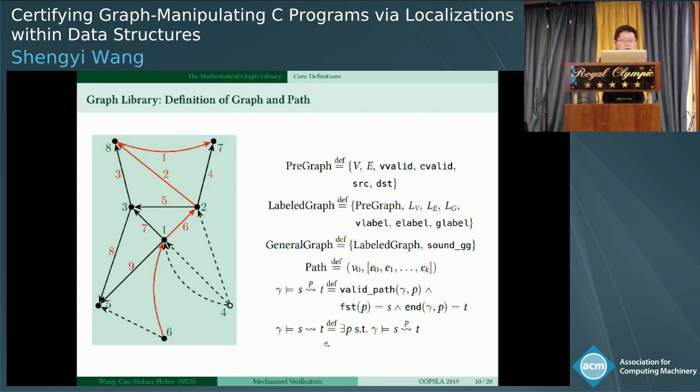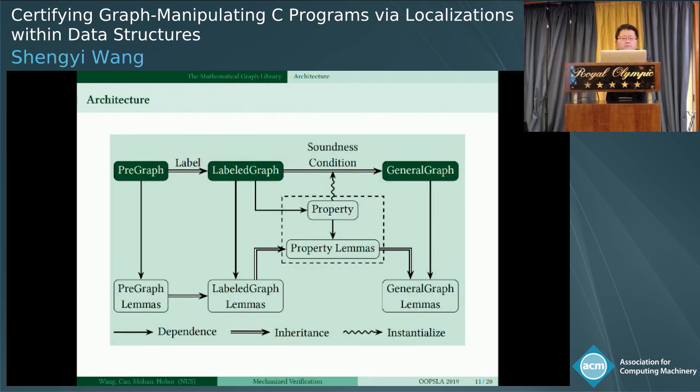Sometimes we only care about the reachability, we don't care about concrete path. Then it can be generalized as t is reachable from s in gamma. This is our architecture of the mathematical graph library. We can see that it's based on three core definitions: pregraph, labeled graph, and general graph. According to the definition, they are inherited, so their lemmas, the related lemmas, also inherit automatically. For different applications we need different soundness conditions and property and property lemmas. We summarize some common patterns of these properties and lemmas that can be composed arbitrarily.